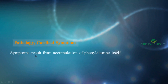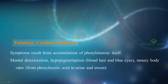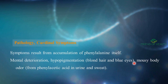Symptoms in phenylketonuria result from accumulation of phenylalanine itself: mental deterioration, hypopigmentation, blonde hair, blue eyes, and mousy body odor from phenyl acetic acid in urine and sweat. The mousy body odor is a very frequently asked feature of phenylketonuria.